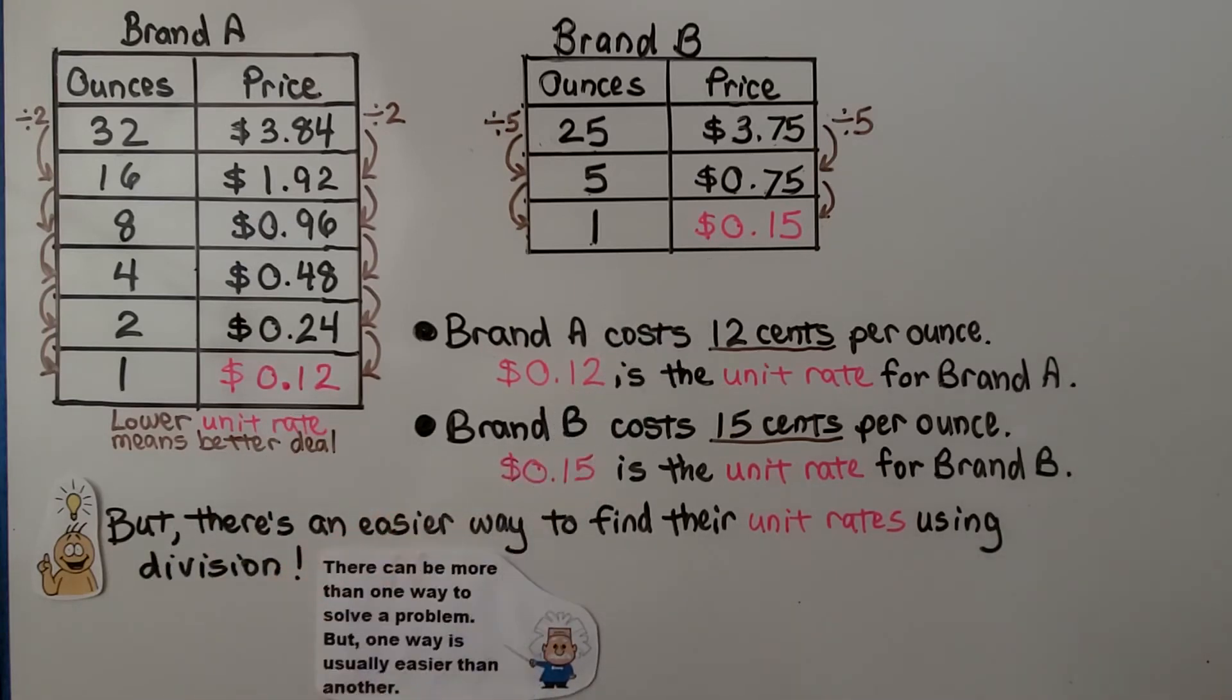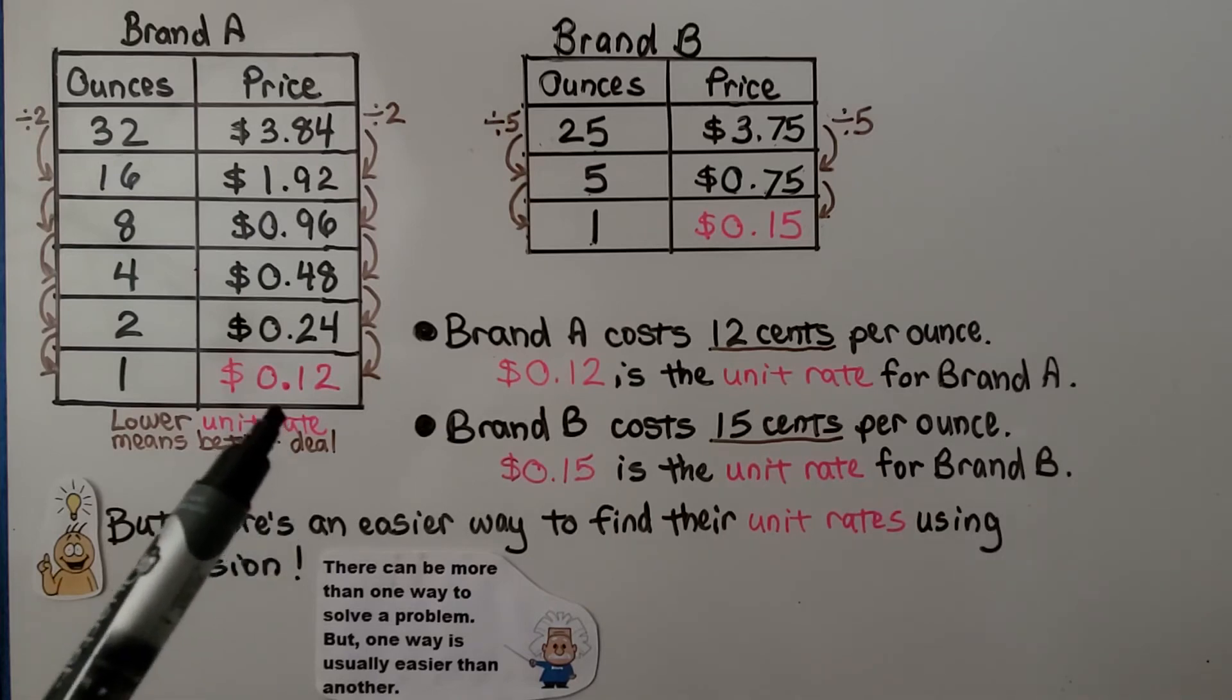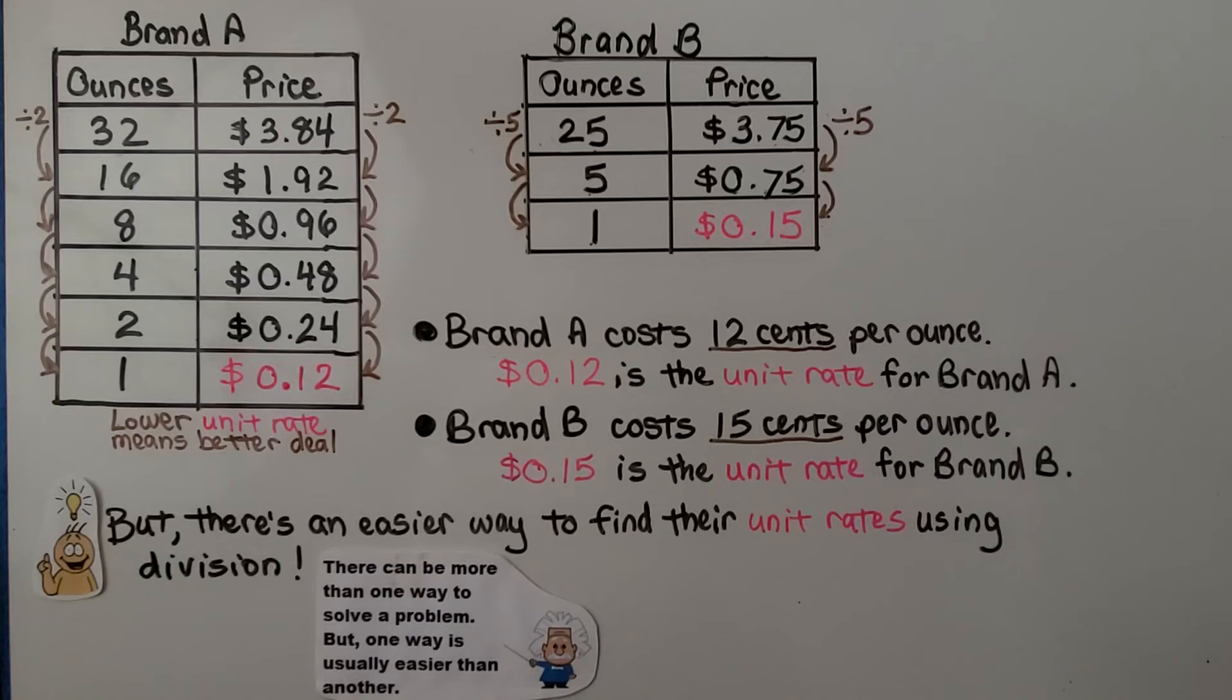We divide the price by 5 and get $0.15. So we know Brand A is $0.12 per ounce, and Brand B is $0.15 per ounce. That's their unit rates, their unit price. But notice that this one is lower, so this would be the better deal, the better purchase. And there's an easier way to find their unit rates using division. Remember, there can be more than one way to solve a problem, but one way is usually easier than another. Sometimes you can think outside the box. If you didn't know to divide, you could just make a table like this until you could compare 1 ounce to 1 ounce.